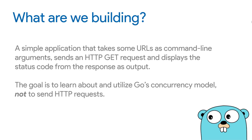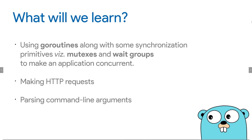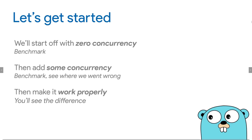Keep in mind that even though we are sending HTTP requests in this example, they are simply placeholders for a task that depends on external resources. You could replace these requests with a database query, a web socket client, a web crawler, or a simple program waiting for user input. Through this video, you'll learn about goroutines, how they work under the hood, how to use mutexes and WaitGroups, how to make HTTP requests in Go, and how to use command line arguments.